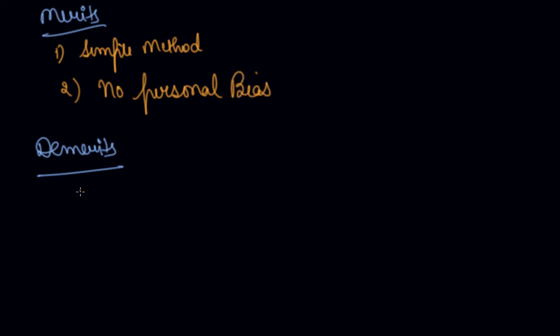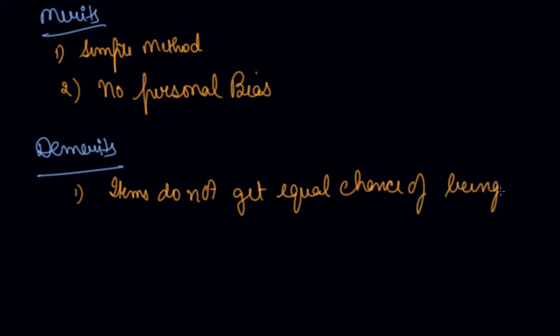Demerits are, every item in the population does not get equal chance of being selected. So items do not get equal chance of being selected.